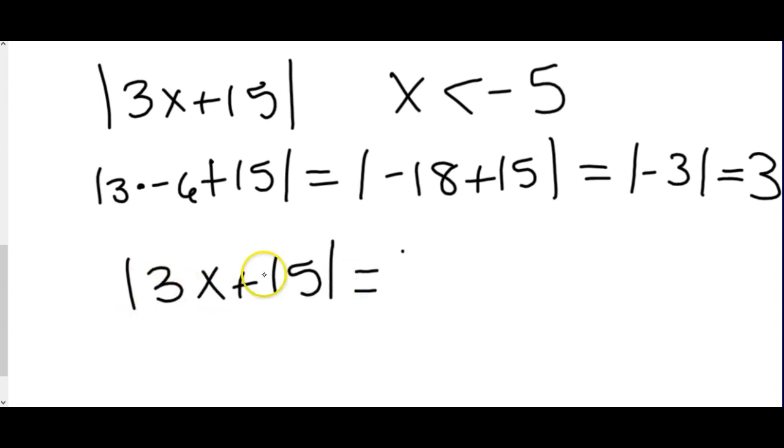Not just the 3x, or not just the plus sign in the middle. I have to change both. 3x is positive, so it's going to become negative. 15 is positive, so that's going to become negative. It changes every sign.